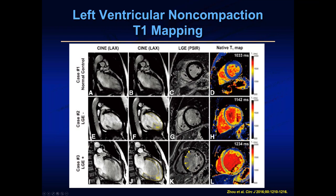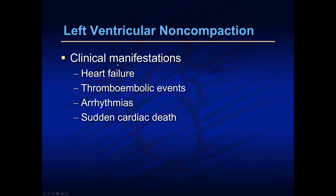We can also look for scar in the heart muscle without giving contrast using T1 mapping — important for patients with impaired kidney function who shouldn't receive gadolinium. When we don't give contrast, we look at what's called LGE-negative sequences to detect the non-compacted ratio. Yellow and orange areas interspersed in the heart muscle represent scar tissue, confirmed once gadolinium — late gadolinium enhancement — is given. The pictures are very similar, so we can quantify scar tissue without contrast, which benefits patients by avoiding an IV.